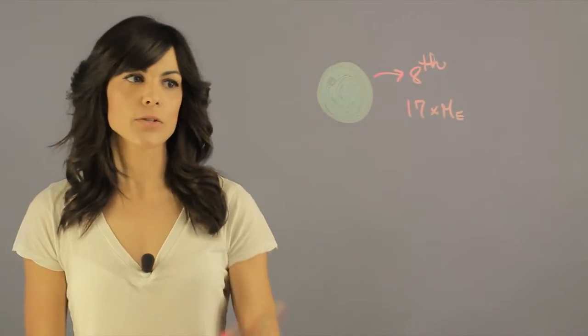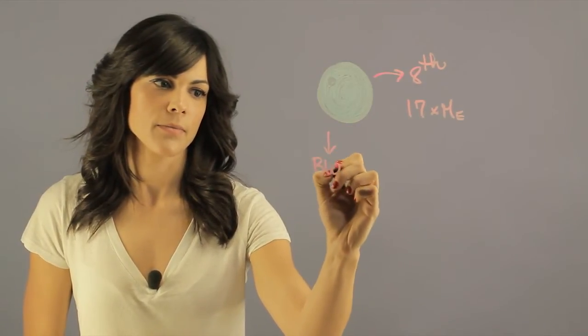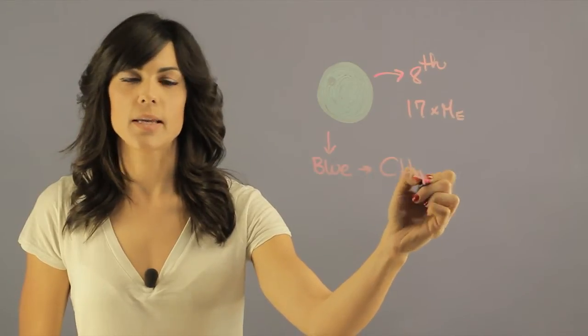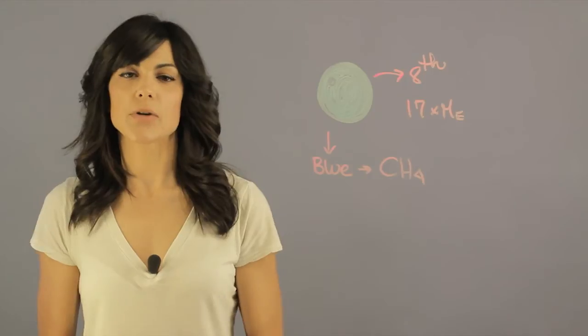And it looks really blue. So it's our blue planet. And this has to do with the amount of methane in the atmosphere, which absorbs the red wavelengths and scatters the blue wavelengths.